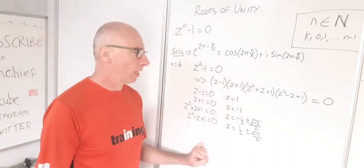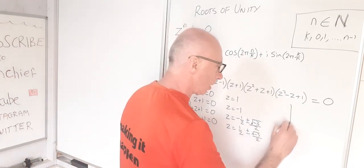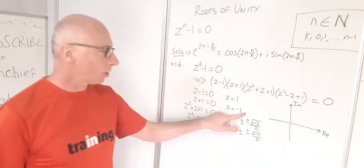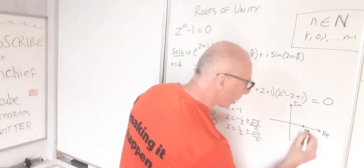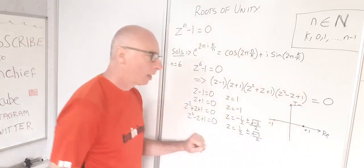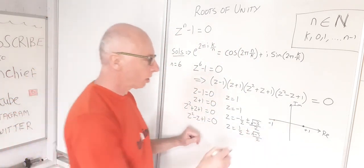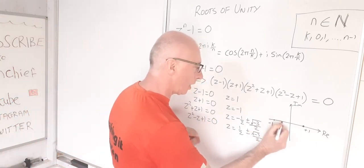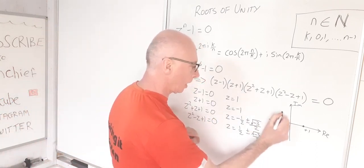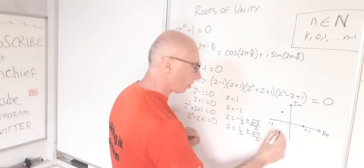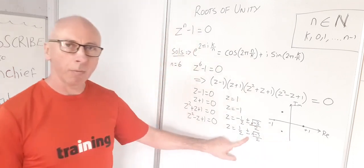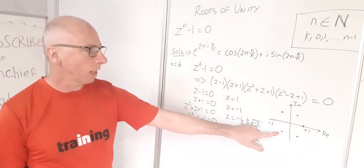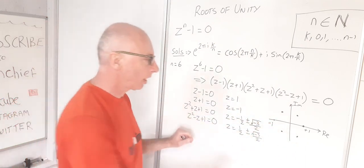We can draw these on the Argand diagram with real and imaginary axes. The values ±1 lie on the real axis. The solutions −1/2 ± √3/2·i lie in the second and third quadrants, and 1/2 ± √3/2·i lie in the first and fourth quadrants. All six roots are equally spaced on the unit circle.